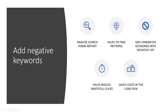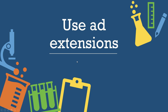Finally, you should definitely add negative keywords because it allows you to analyze your search terms report, helps you find patterns, and by adding negative keywords you're able to put unwanted keywords into negative lists, which will help you reduce wasteful clicks and save costs in the long run. Also, make sure to use ad extensions — I have a separate video tutorial on Google Ads extensions. It's a fantastic way to use sitelink, callout, location extensions, review extensions, and other supplementary information that goes along with your headline and description. Ad extensions play a very important factor in increasing your click-through rate.